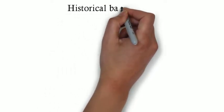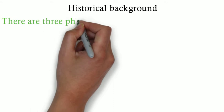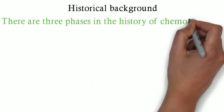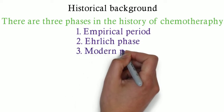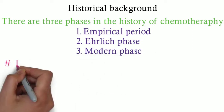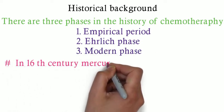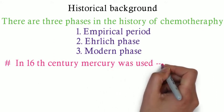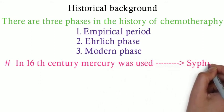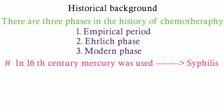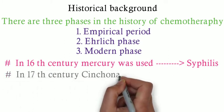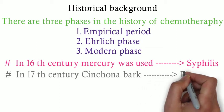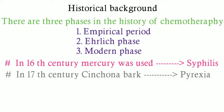Now let us see the historical background of chemotherapy. There are three phases: the Empirical period, the Eldridge period, and the Modern phase. In the 16th century, mercury was used for the treatment of the bacterial infection syphilis, which is a sexually transmitted disease. In the 17th century, cinchona bark was used for the treatment of pyrexia.